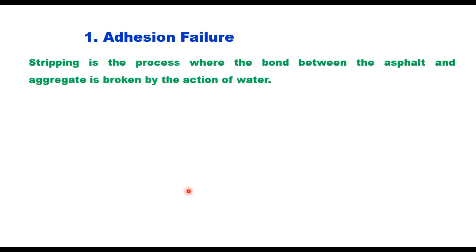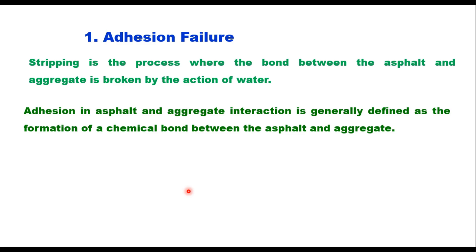Adhesion failure, or stripping, is the process where the bond between the asphalt and aggregate is broken by the action of water. This process is based on a chemical phenomenon where water molecules alter the interactions between the asphalt and the aggregate surface. Aggregates have a higher affinity for water than for asphalt and are more readily wetted by water. Water will penetrate through asphalt by osmosis, and the rate will depend upon the thickness of the asphalt film and the pressure difference across it. In general, softer grades are more permeable to water because of lower viscosity.